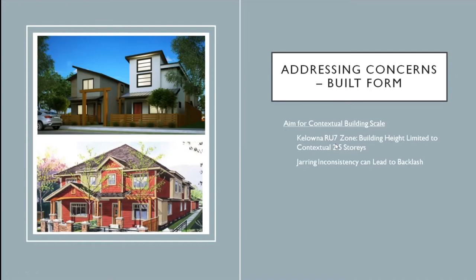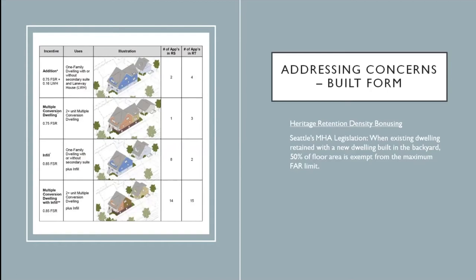Another fear heard quite often — especially in Seattle and Portland — was the loss of older or character homes that people value. In Seattle, where concerns over loss of older homes were prevalent, heritage retention bonuses were implemented into the Mandatory Housing Affordability program. A developer who preserves a heritage home qualifies for a 50% exemption on the floor area limit, meaning more total density is allowed than if the dwelling is demolished. This can be achieved through laneway homes at the back or conversion of the existing house into multiple units.